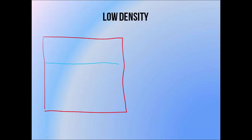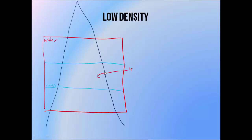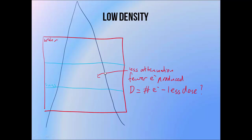You might wonder why isn't there always a lower dose inside the lung region? If there's less attenuation in the lung, it makes sense that there'd be fewer electrons produced since there'd be fewer photons interacting, and remember the amount of dose inside a region is proportional to the number of electrons passing through it. You might think if there are fewer electrons wouldn't there be less dose? This is frequently not the case. Remember that each point receives most of its dose from electrons produced in irradiated areas around it.